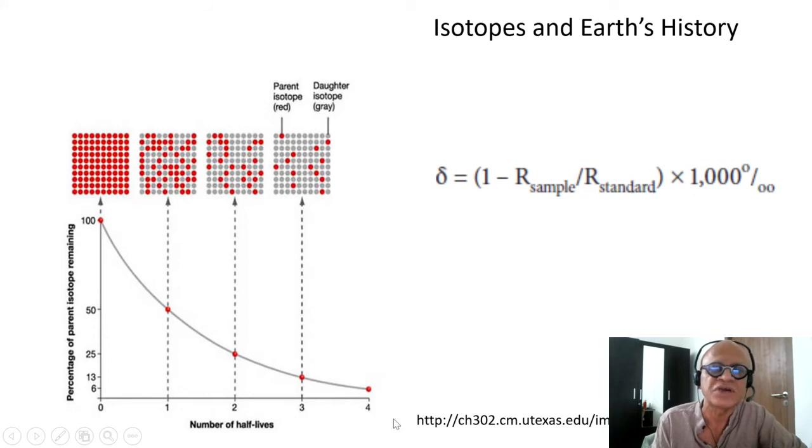That becomes very useful to take a substance like carbon hydrocarbon from the past and look at some carbon isotope. We know from our chemistry what its original concentration would have been in terms of parent and daughter, and then looking at the depletion or the remaining parent versus daughter isotope, we can say how old.